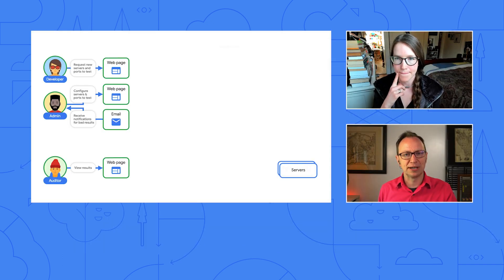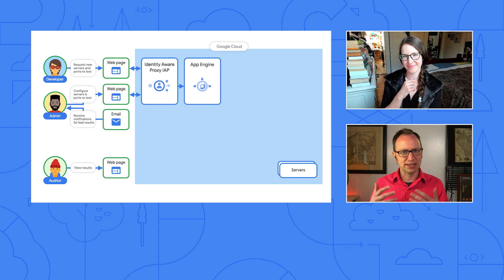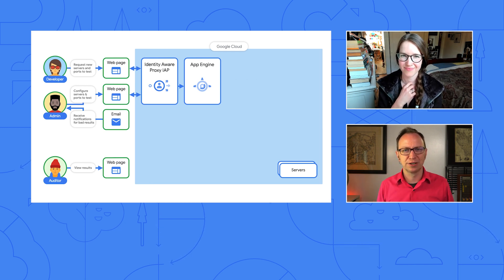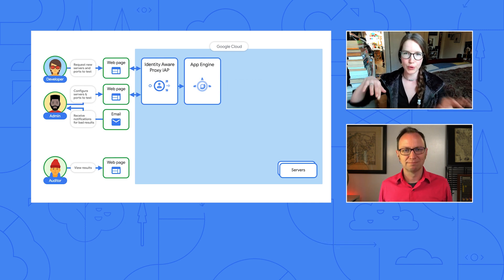Exactly. What might we put in there to make it easy to keep employees in and everybody else out? Well, I think another thing to consider is it's only internal employees, but these employees have different permissions and different roles. So it should be something that allows us to tweak and tune the permission levels. Developers and admins can do different things. So I'm thinking Identity-Aware Proxy here, backed by App Engine. It's really easy to put IAP and App Engine together. App Engine with IAP in front of it controls who can get in.